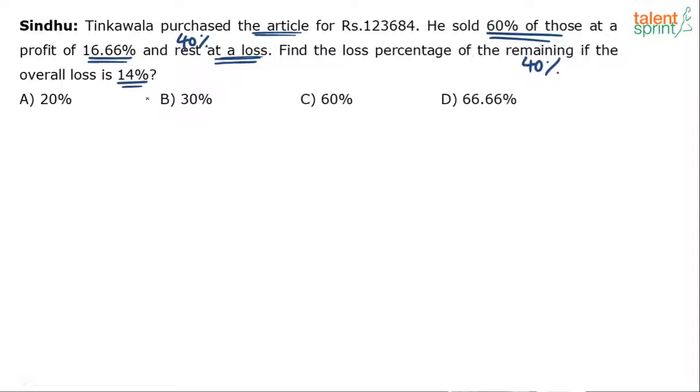You know what is the biggest problem in this question? What is the tricky part in the question? This number 1, 2, 3, 6, 8, 4. You know what is the best way to solve this question? Don't consider 1, 2, 3, 6, 8, 4. Let's assume it is 100.